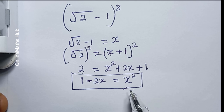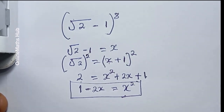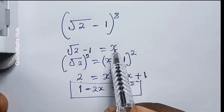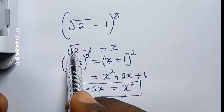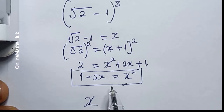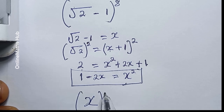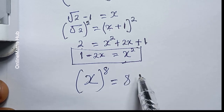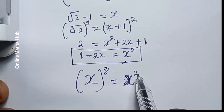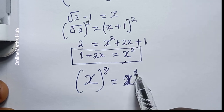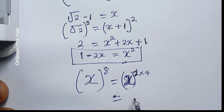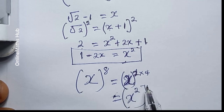Now that I've gotten x squared, I'm going to move back to the question. In place of √2 minus 1, I put x, so the question becomes x raised to power 8. I can split the exponent 8 as 2 multiplied by 4, giving me x squared all raised to power 4.